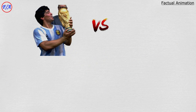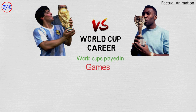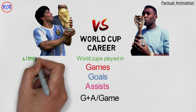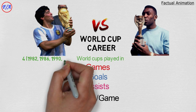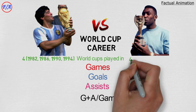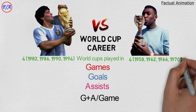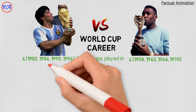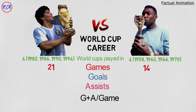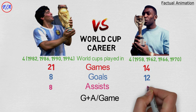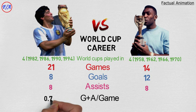Now comparing their World Cup careers: Maradona played in four World Cups — 1982, 1986, 1990, and 1994. Pelé also played in four World Cups — 1958, 1962, 1966, and 1970. Maradona played 21 World Cup games, scored 8 goals, and provided 8 assists — 0.76 goal contributions per game. Pelé played 14 games, scored 12 goals, and provided 8 assists — 1.43 goal contributions per game.